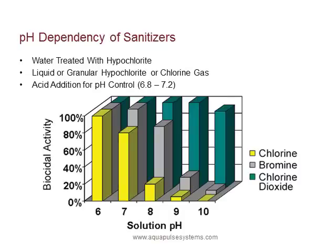Some sanitizers, such as chlorine, bromine, and iodine, are pH dependent. In this example, you can see in the yellow graph for chlorine that its activity is great at a pH of 6, but is very low at a pH of 9 or 10. Bromine follows a similar pattern. Chlorine dioxide, peroxides, peroxyacetic acid, and ozone are not pH dependent.